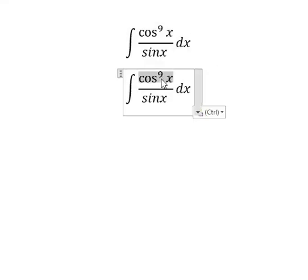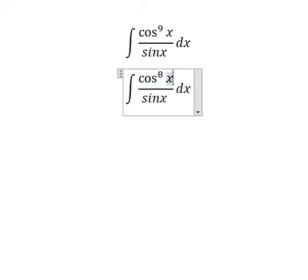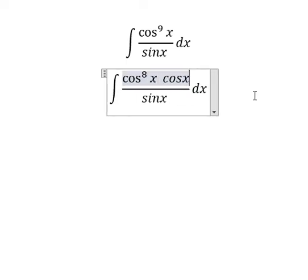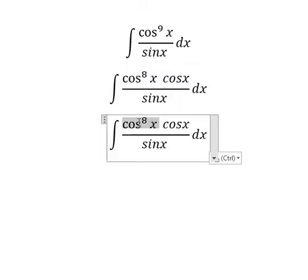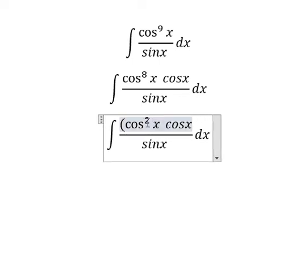For cos x to the power of 9, we can rewrite this as cos x to the power of 8 multiplied by cos x. Next, cos x to the power of 8 can be rewritten as cos squared x to the power of 4.